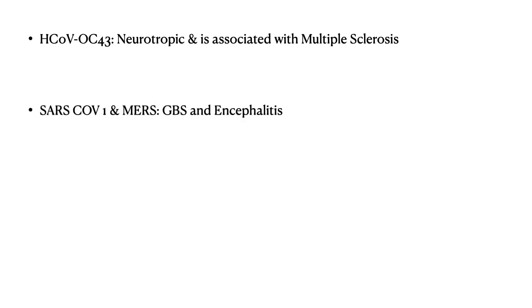Among the other coronaviruses, neurotropic effects have been observed and some association with multiple sclerosis has been noted. Apart from these viruses, SARS-CoV-1 and MERS have been associated with GB syndrome and encephalitis.